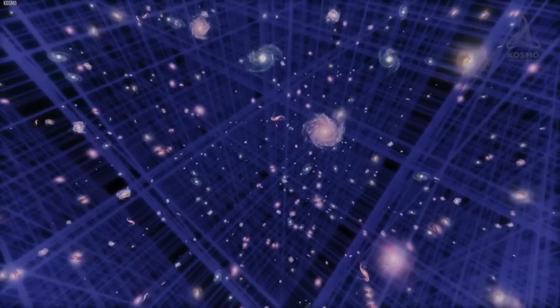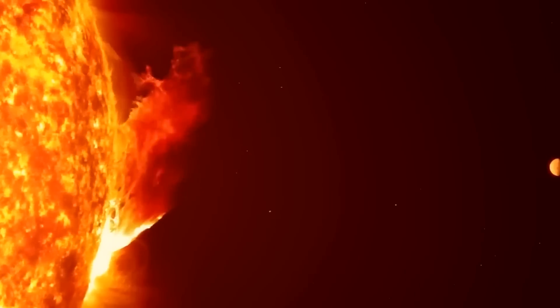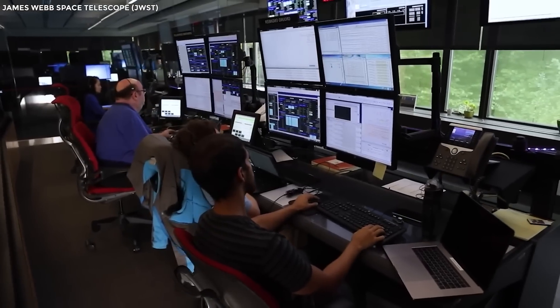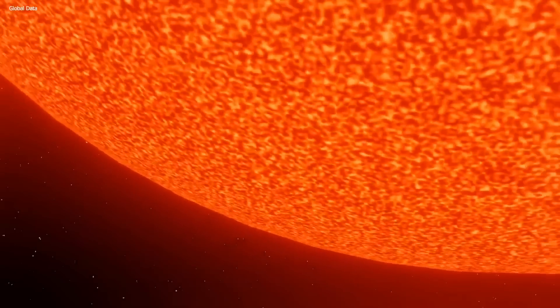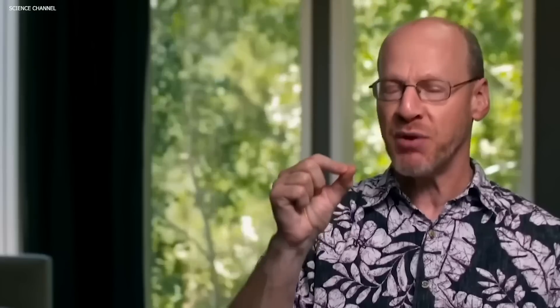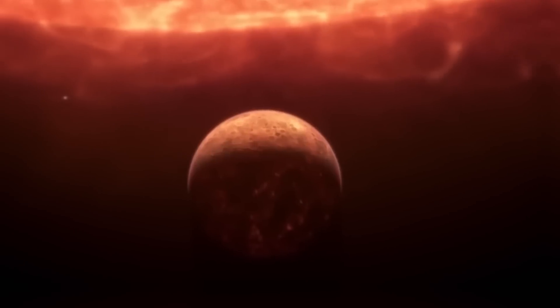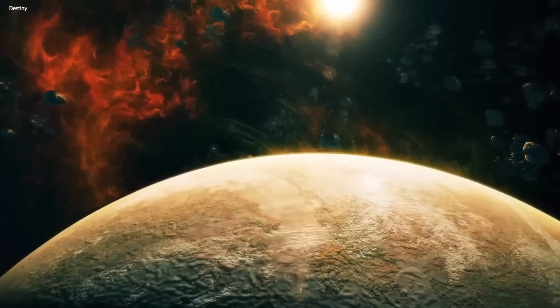Today we will discuss Betelgeuse itself, a red supergiant located in the constellation Orion. Betelgeuse, the star that shines brightly in the night sky, is an enormous celestial body. In fact, it is so large that if it were to replace the Sun, it would engulf the orbit of Mars and extend all the way through the asteroid belt.